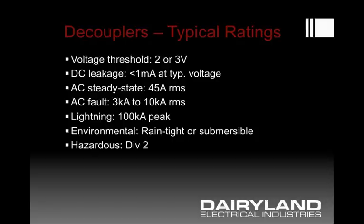Lightning current ratings can very commonly be 75 or 100 kA as the peak value. Devices are commonly rain tight or submersible depending on where the product is located, either of which could apply. The most common hazardous location is generally classified as division two, though there are some division one locations where hazardous gases are expected to be present all of the time, but that doesn't tend to be the majority of sites.